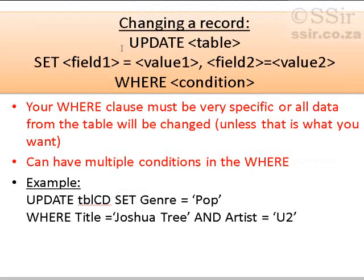An update query is the last one, where we take an existing record already in our table and change its field values. The structure is: UPDATE table, SET the field you want to update and its value, then the next field and its value, then WHERE your condition. For example: UPDATE table CD, SET genre to pop WHERE title equals Joshua Tree AND artist equals U2.